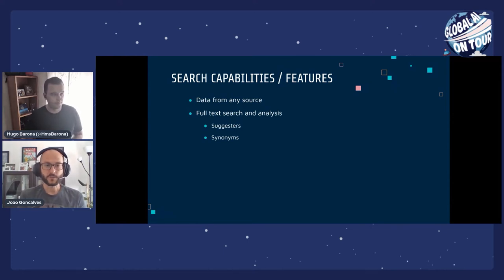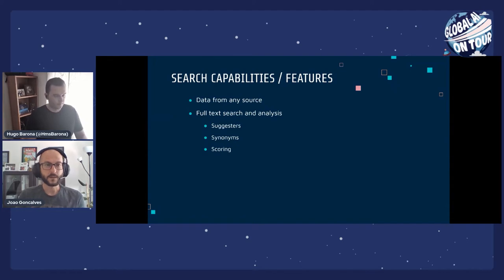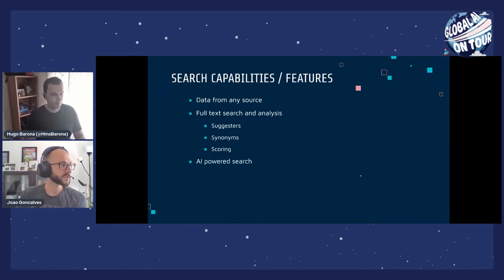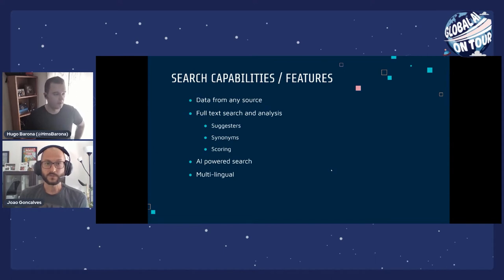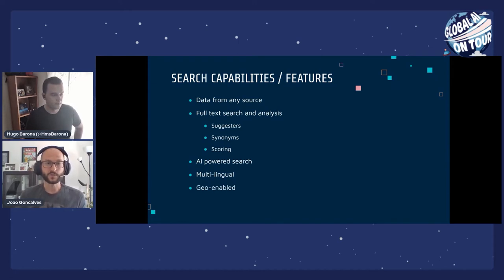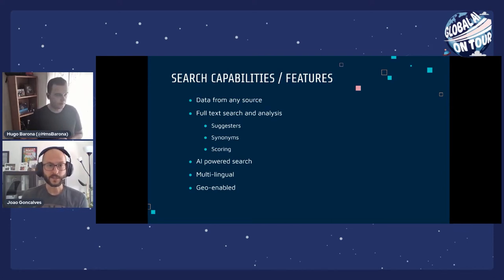We have synonyms, which are assets we can create to expand the scope of a query without providing the full term — for example, mapping the word 'dog' to 'canine' or 'puppy.' The use of skill sets and skills is what keeps the service an AI-powered search. It is multilingual, so you can retrieve results in the user's own language. Lastly, it has support for geospatial queries, allowing you to retrieve the distance between two points or whether a point is within a polygon using these functions in the query syntax.